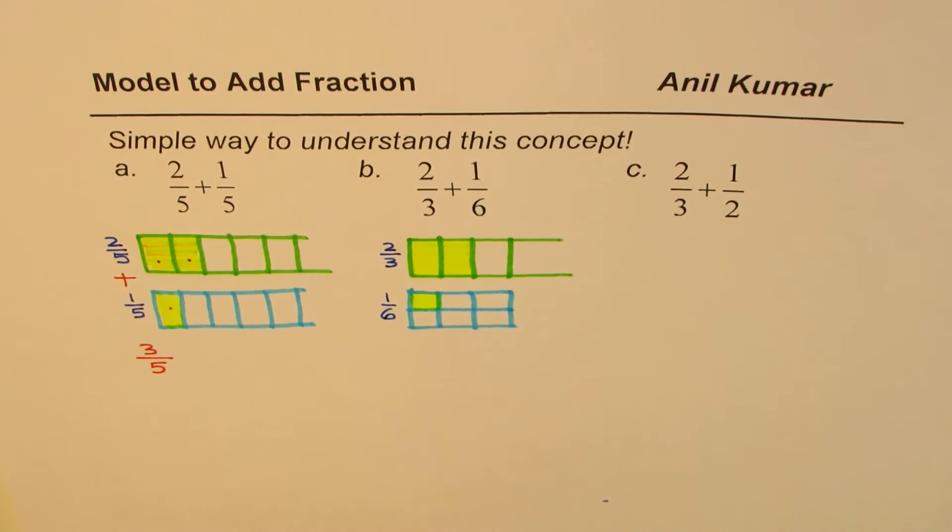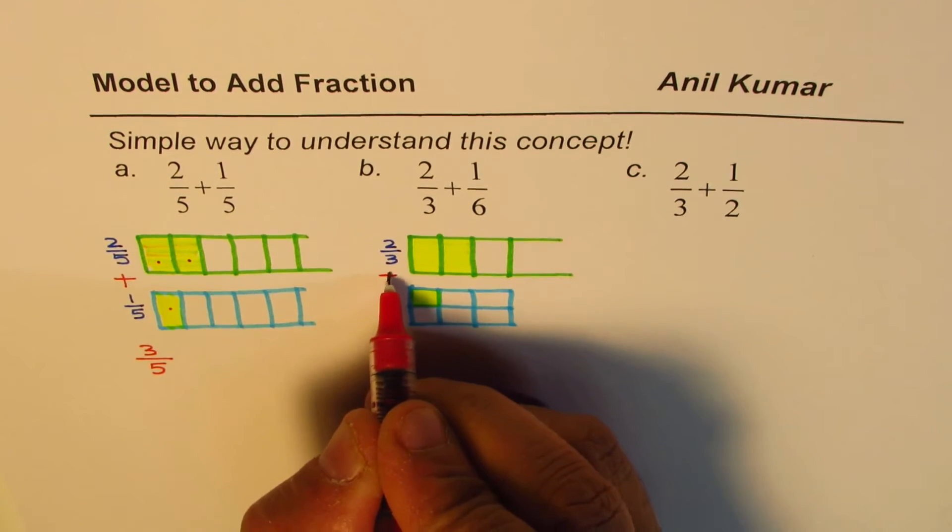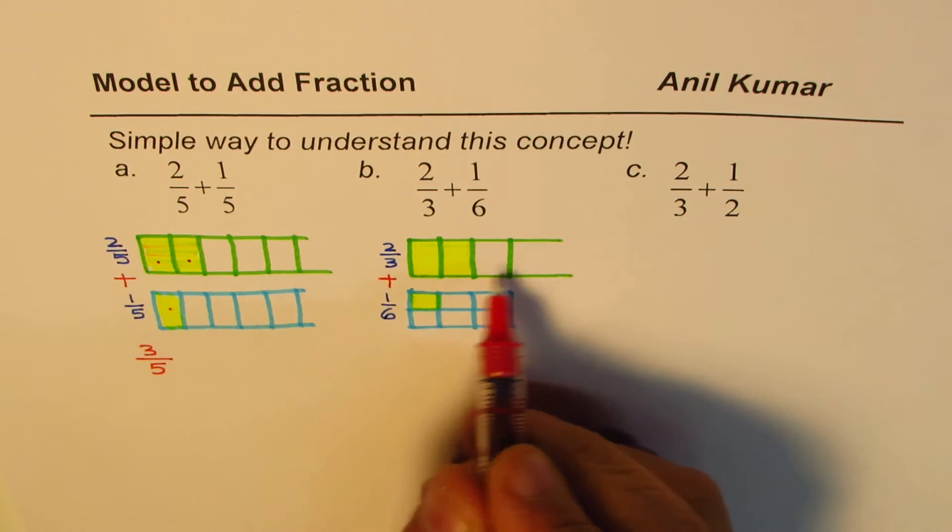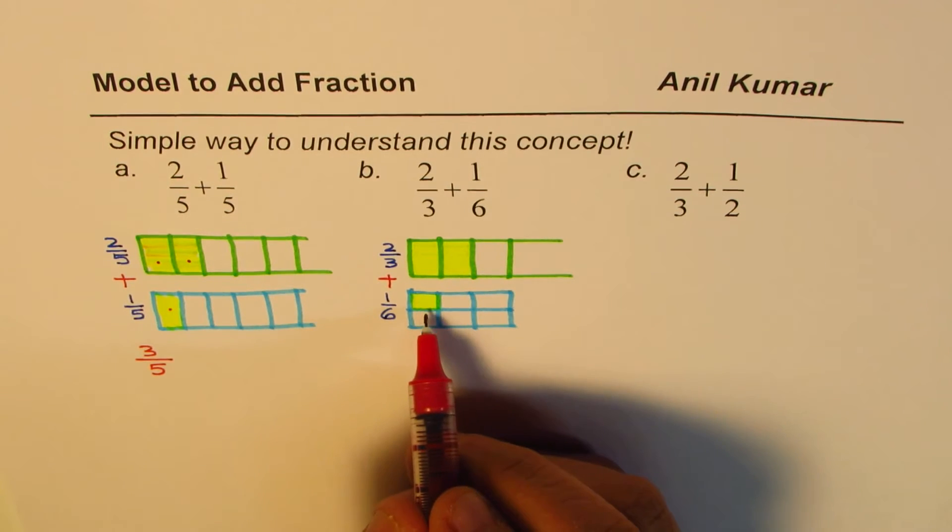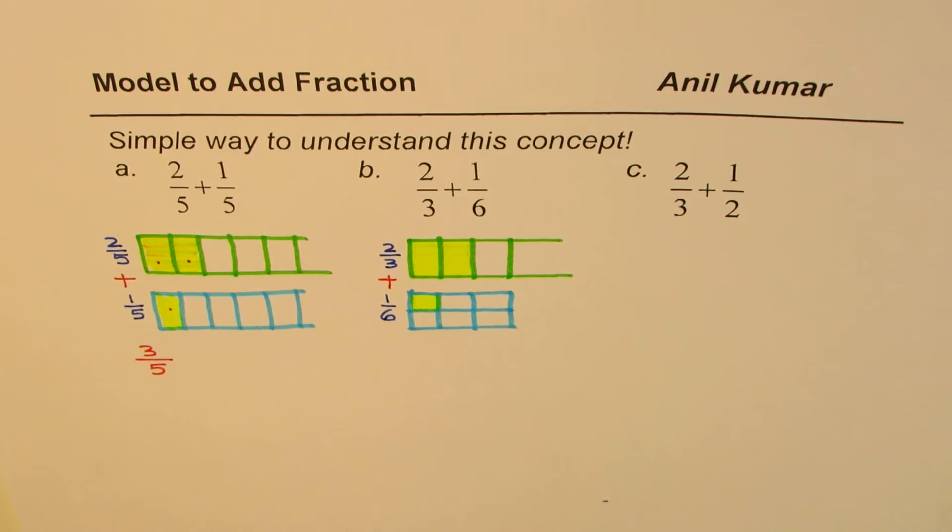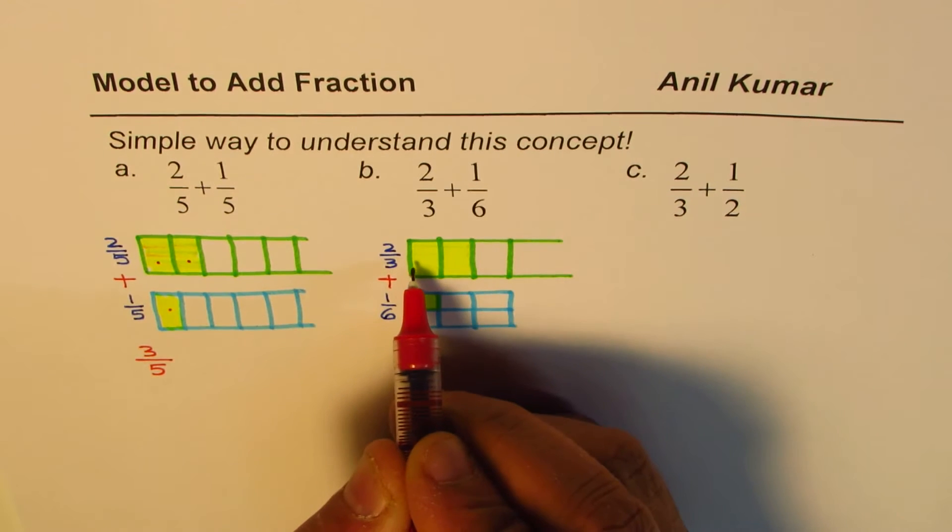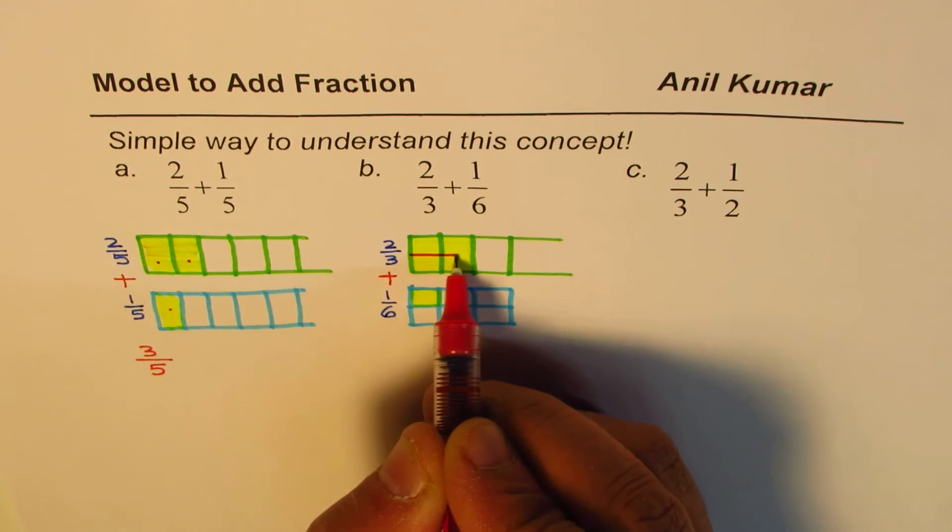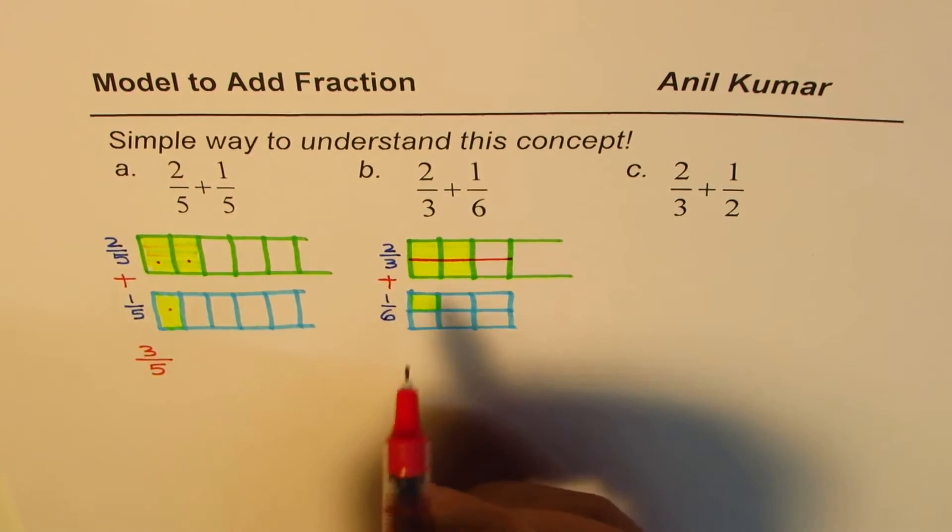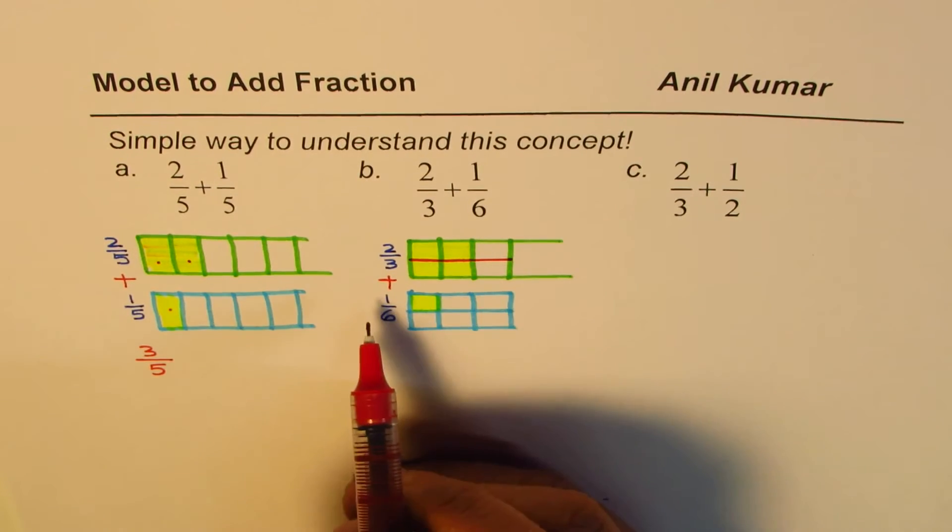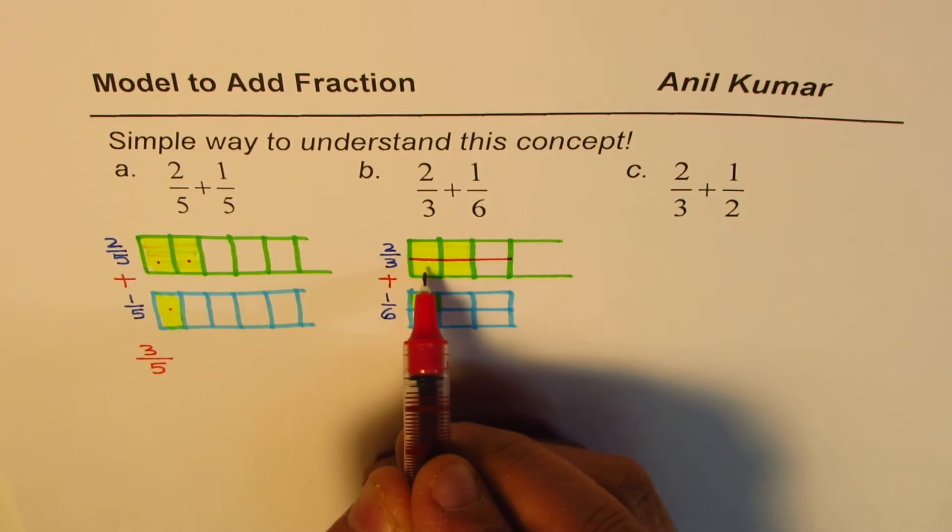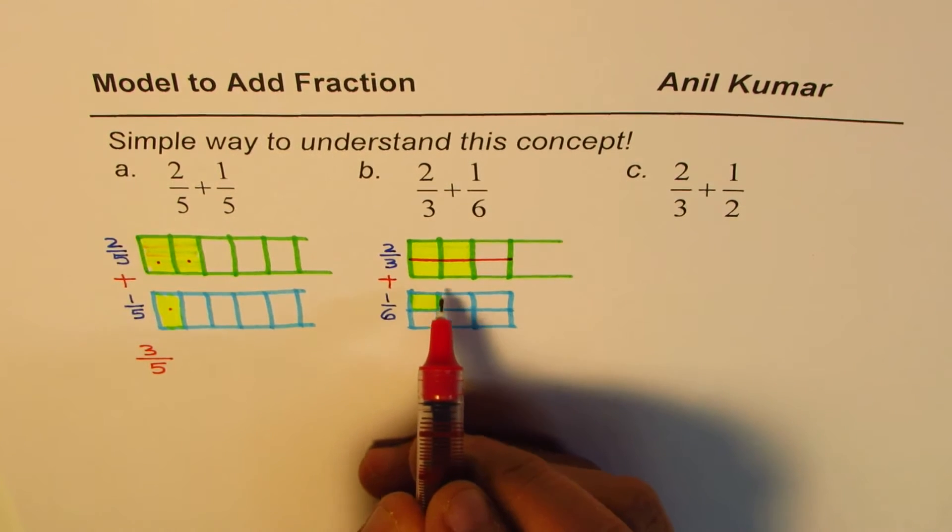Now the question is, how do we add these two? Now the sizes are different. Do you see this? 1 sixth is kind of half of 1 third. So what we can do here is that we can divide the first rectangle into 6 parts. Do you see this? Still, this is 2 thirds, but each portion is 1 sixth. Now we can add. Do you see why common denominator is very important?